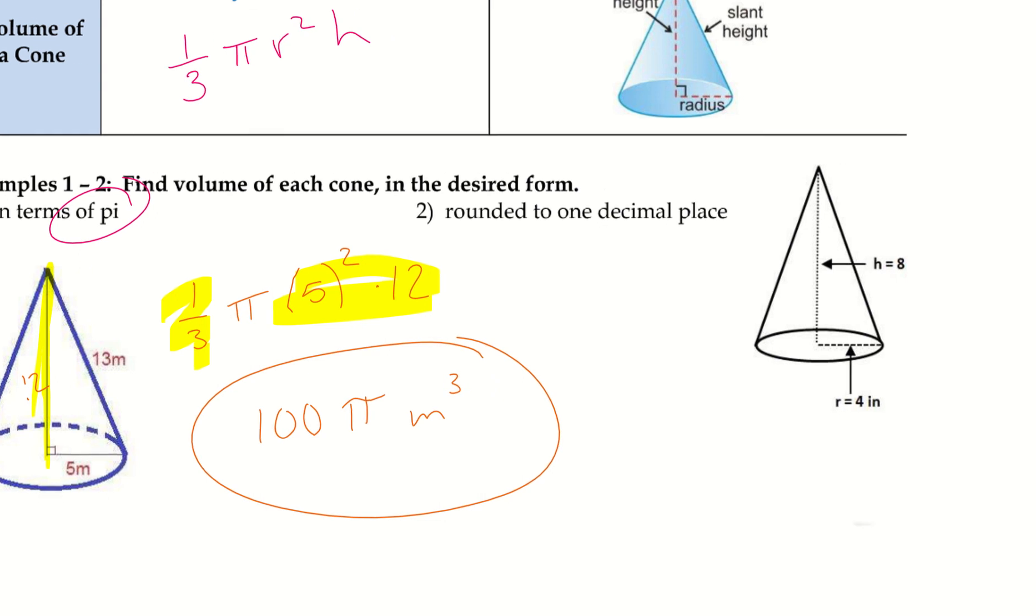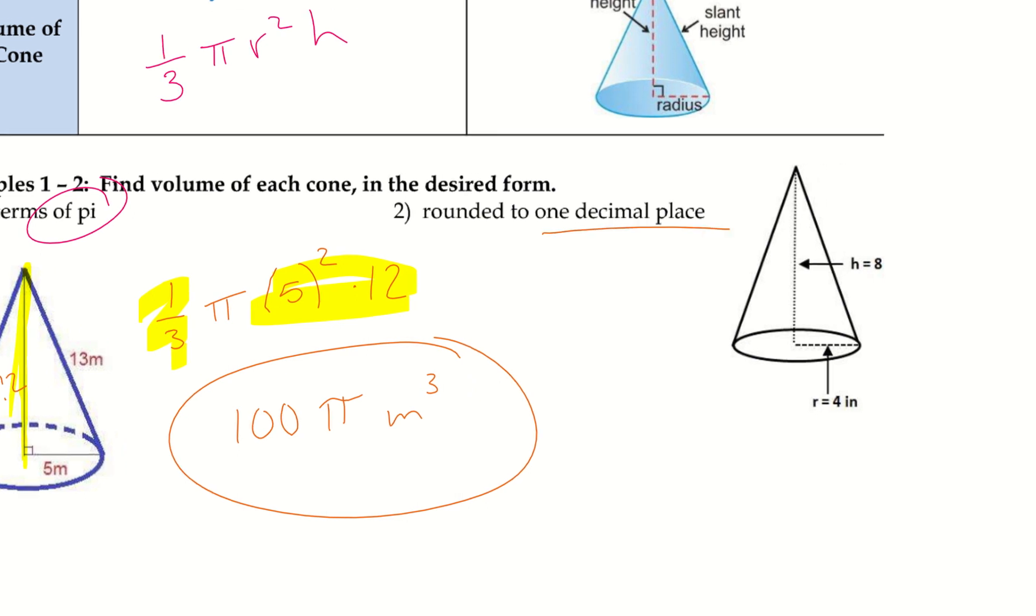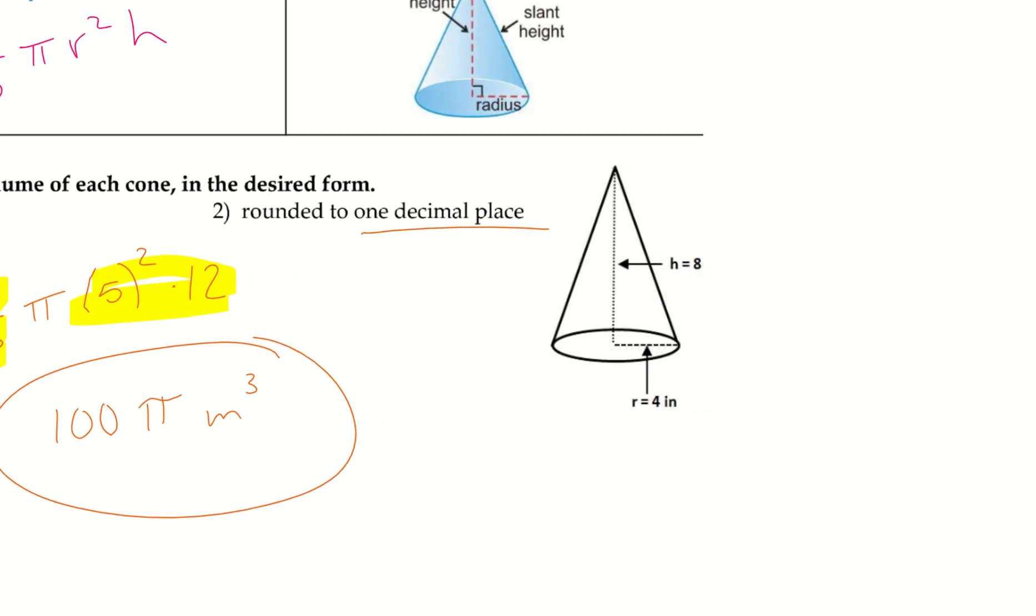All right, let's go ahead and take a look at number 2. This one's rounded to one decimal place. And this one already gives us the height, so we don't have to go and find that. And I'm going to have one-third pi r squared times the height. So, one-third pi, four squared times eight.